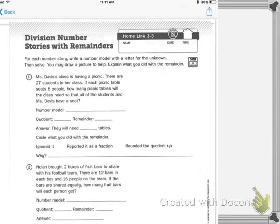Number 1 for your homework. Mrs. Davis' class is having a picnic. There are 27 students in her class. If each picnic table seats 6 people, how many picnic tables will the class need so all of the students and Mrs. Davis have a seat?